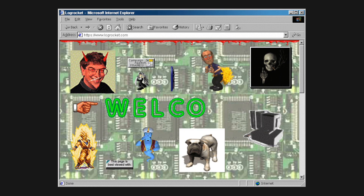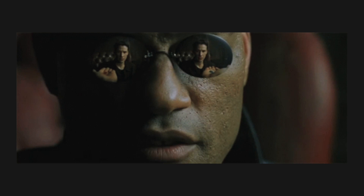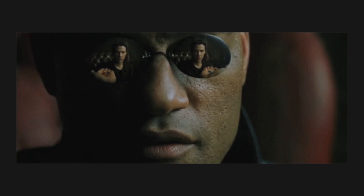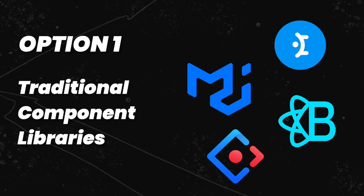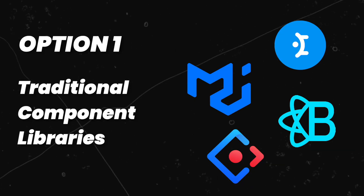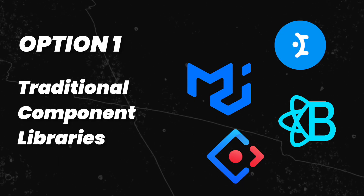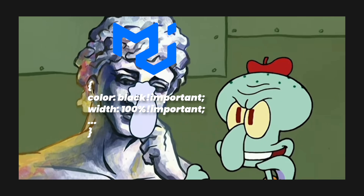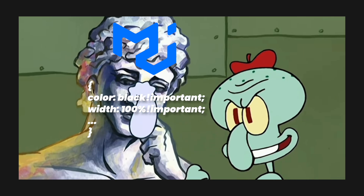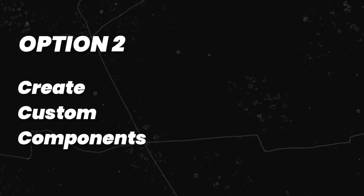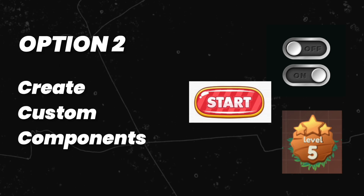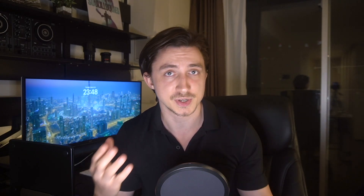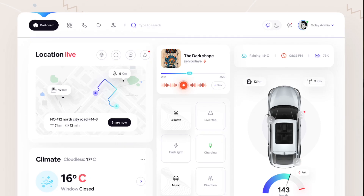Up until recently, if you wanted to create a truly custom UI, you had pretty much two choices. Option one: use a traditional component library such as Material UI, and override all the basic styling to match your design. Or option two: create your own custom components completely from scratch. But both options can come with significant costs.